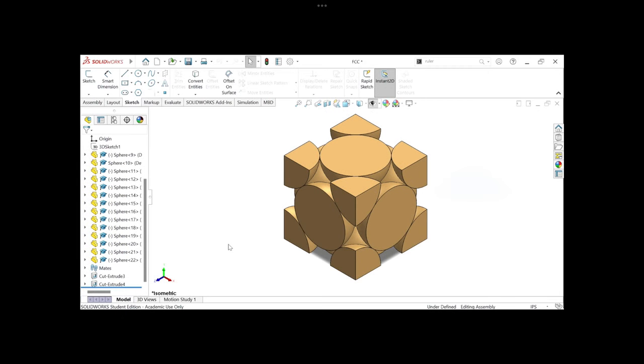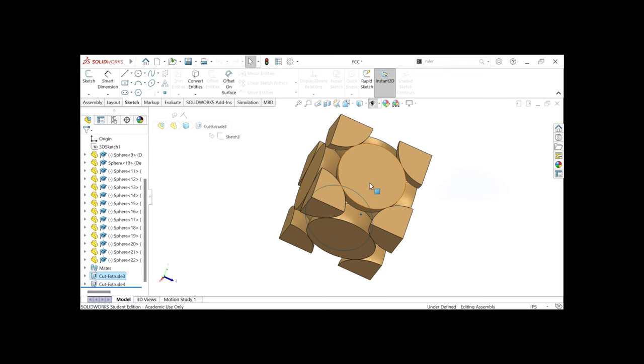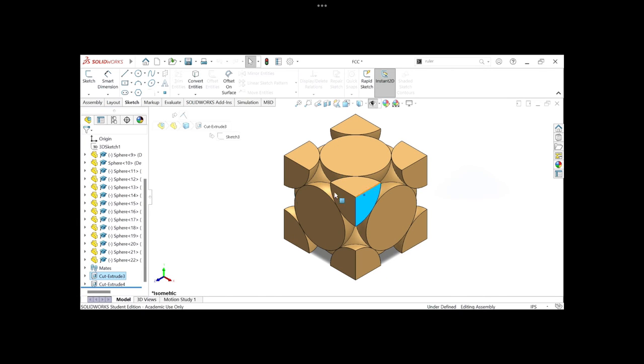This is my face-centered cubic structure. As you can see, six half spheres facing the center, and we have eight one-eighth spheres at the vertices of the cube.